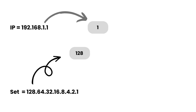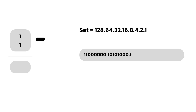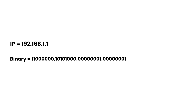Now take 1 from the IP address and 128 from the set, and do the same binary conversion as before. As you can see, 1 cannot be subtracted using the first seven numbers in the set — 1 can only be subtracted using the 1 at the last position in the set. Do the same for the last octet of the IP address; you get the same binary value as you did for 1.